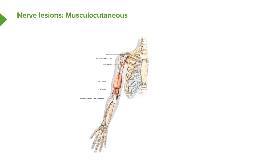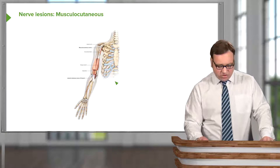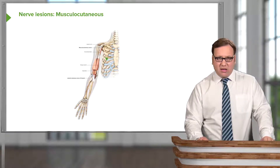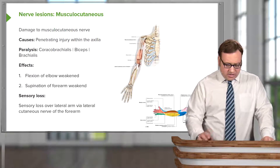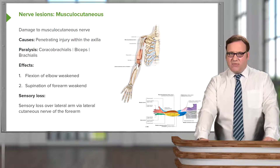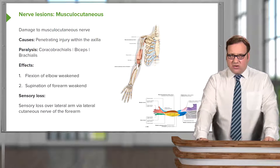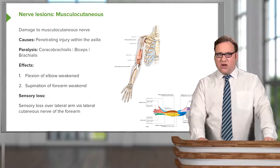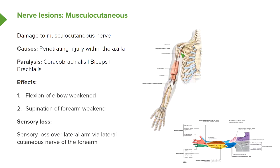Let's start by looking at the musculocutaneous nerve. As we can see on the screen here, the musculocutaneous nerve is involved in supplying muscles within the anterior compartment of the arm. Damage to the musculocutaneous nerve, which can happen as a penetrating injury within the axilla — perhaps during a fight — can lead to paralysis of the muscles it supplies. It supplies coracobrachialis, biceps brachii, and brachialis.